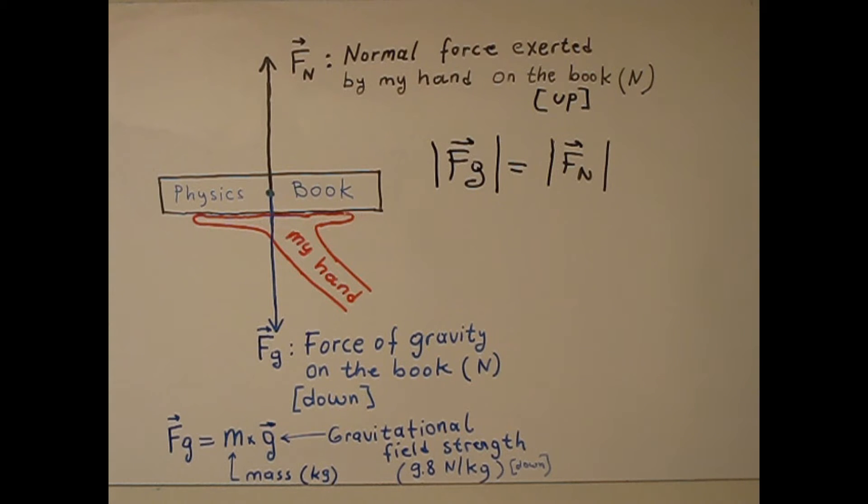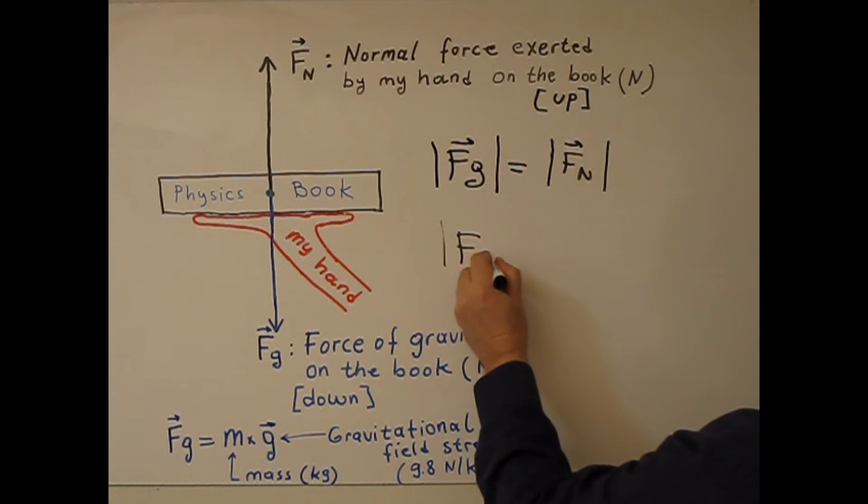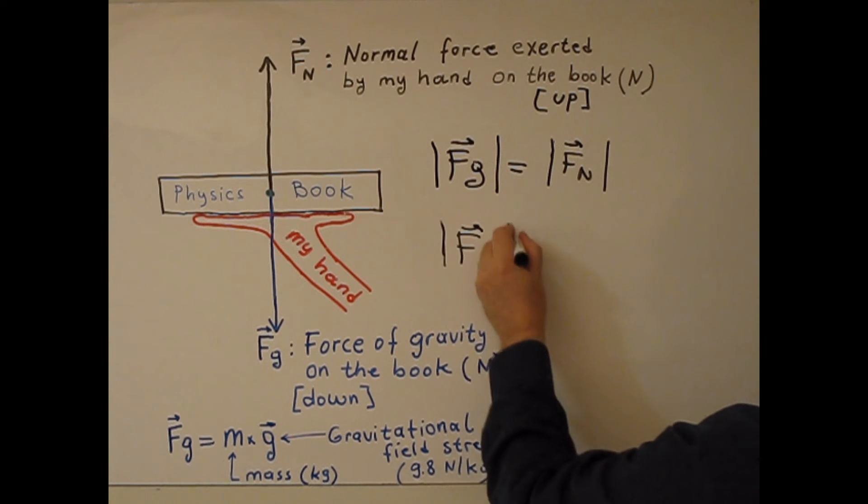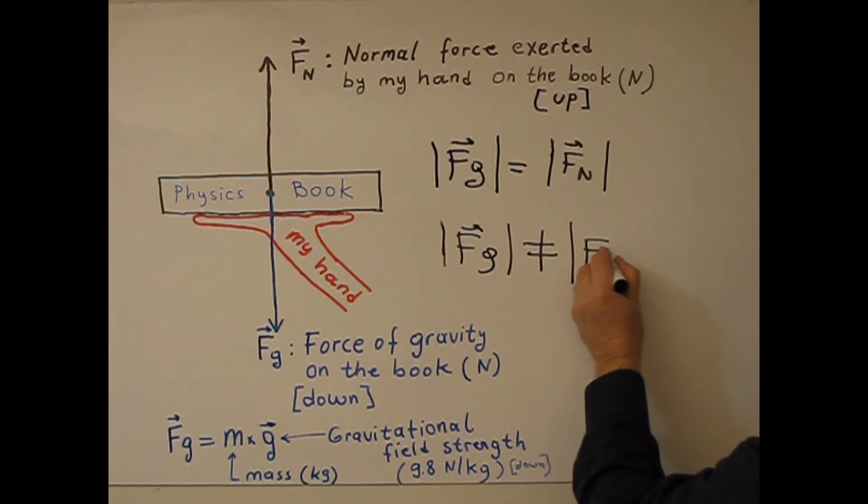In case my hand moves with varying velocities up or down, increasing or decreasing, in this case velocity is not constant and there is acceleration is not zero. There is acceleration. In this case magnitude of Fg not equal magnitude of Fn.